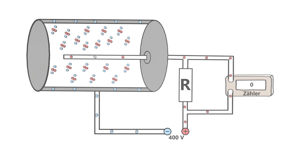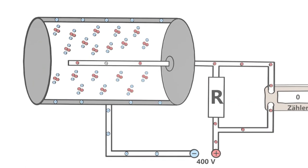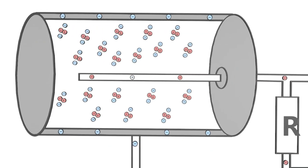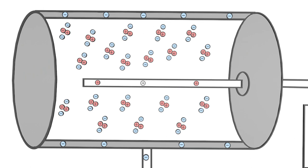Here you can see the structure of such a device. A noble gas is located in a metal cylinder. In the middle of the metal cylinder there is a positively charged wire. The outside wall of the cylinder is negatively charged. How can radioactive radiation now be measured?